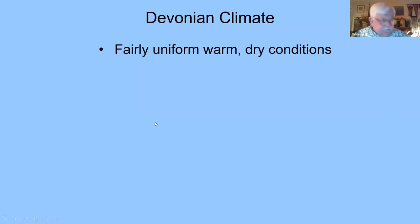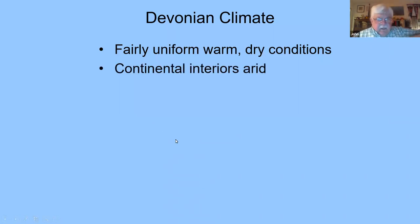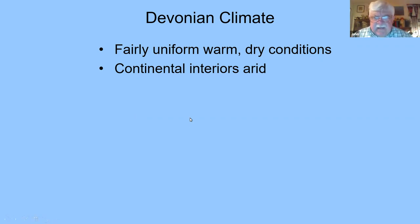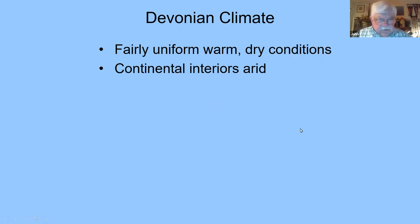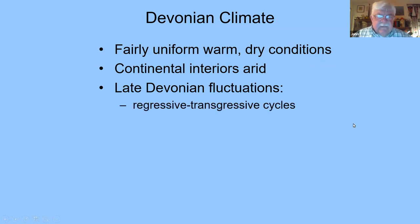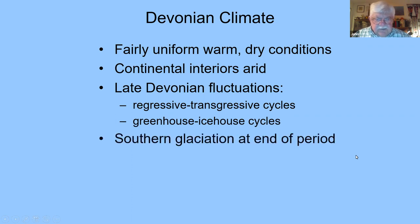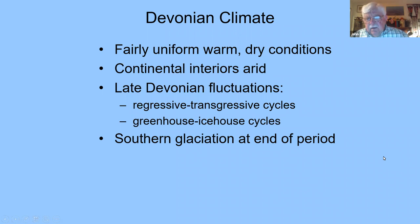The Devonian climate had fairly uniform, warm, dry conditions - continental interiors are arid. That was the start of the idea that lobe-finned fish like Eusthenopteron would walk or crawl with their fins to larger ponds as pools dried up, making their limbs stronger. We found out that's not quite true, as I'll show you. Late Devonian fluctuations included regressive/transgressive cycles with onlaps and offlaps, greenhouse and icehouse cycles, southern glaciation at the end of the period going into the Mississippian.